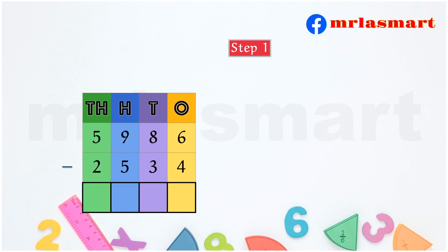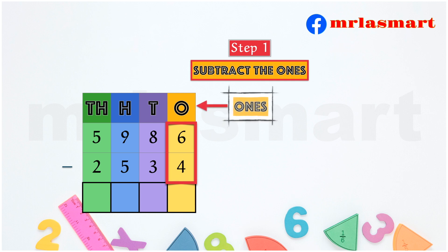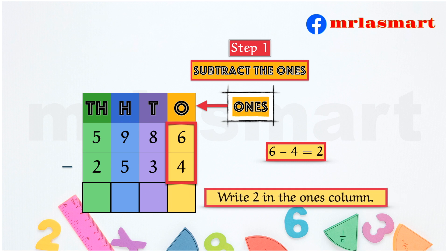Step 1. Subtract the ones. 6 minus 4 equals 2. Write 2 in the ones column.